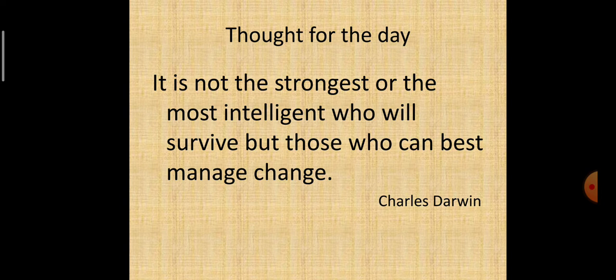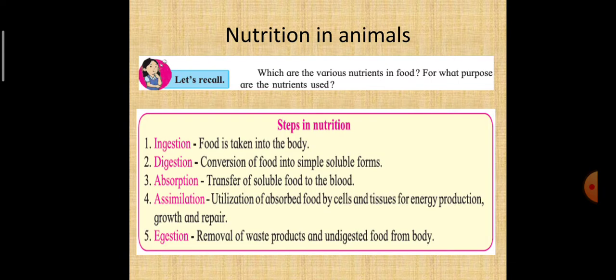Now, let us move further with nutrition in animals. Let us recall, which are the various nutrients in food and for what purpose are the nutrients used? If you remember, earlier you have studied what nutrients are required: carbohydrate, proteins, vitamins, minerals, fibers.